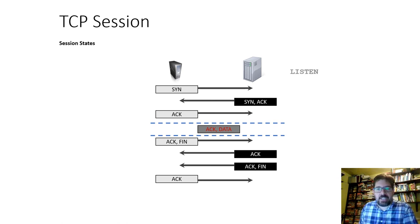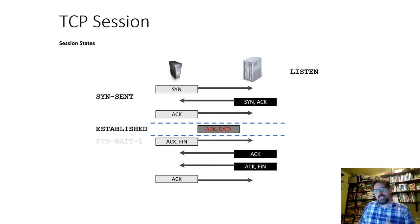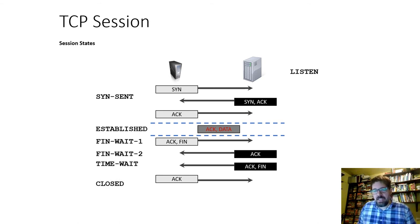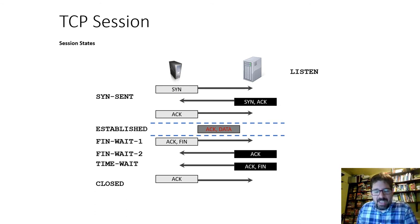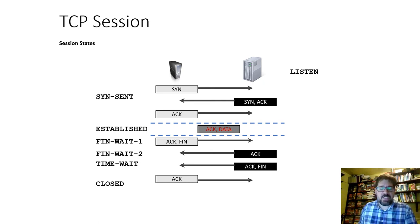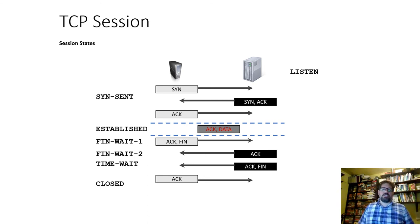In this process, the server starts in a LISTEN state. After the handshake it moves through SYN_SENT, then ESTABLISHED. When closing, it goes through FIN_WAIT_1, FIN_WAIT_2, TIME_WAIT, and finally CLOSED. When you run the netstat command on Linux, Windows, or Mac, you'll typically see either LISTEN or ESTABLISHED — the other states are very ephemeral and short-lived. A broken connection might show TIME_WAIT as the system waits to fully close.